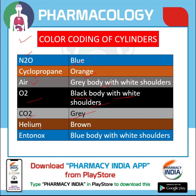Helium is filled in brown cylinders, and Entonox has a blue body with white shoulder.